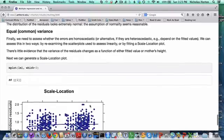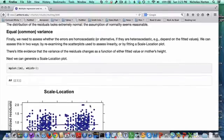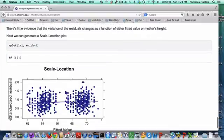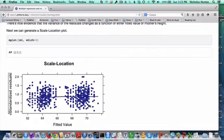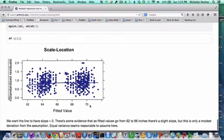And finally, the equal or common variance assumption. We need to assess whether the errors are homoscedastic or if they depend in some ways on the fitted values or the mother's height. That would be heteroscedastic, the opposite of homoscedastic. So here there's little evidence, if we go back to those scatter plots, that the residuals change as a function of fitted value or mother's height. But we can also generate a scale location plot to do this. We use the mplot function to do this. What we want for the mplot function here is that line that we see to be relatively straight. And we do see some indication that as you go from 62 to 66 inches, there's a slight slope.